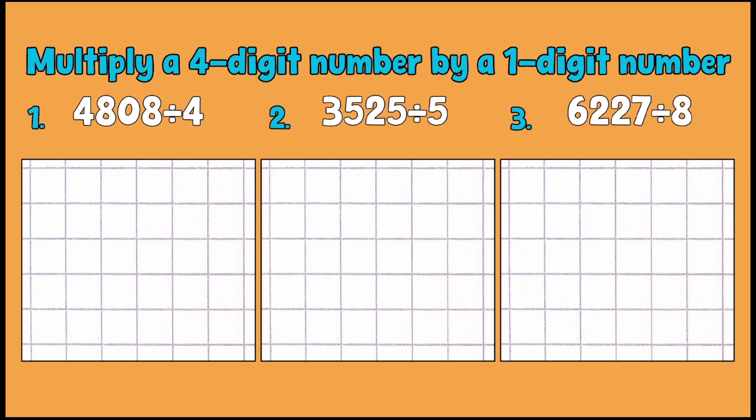Our first one is 4,808 divided by 4. What we're trying to do is split 4,808 into four equal pieces, and the way to do that with short division is to put it into a bus stop. So 4,808—that's the number I'm dividing—and what I'm dividing by is 4, so I'm going to put that just on the outside.